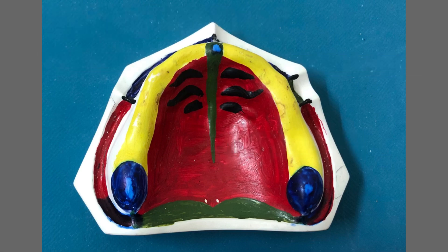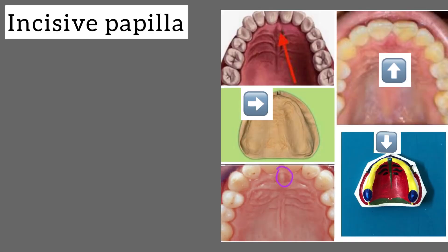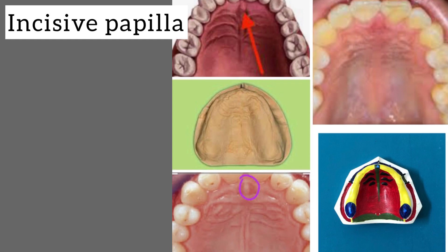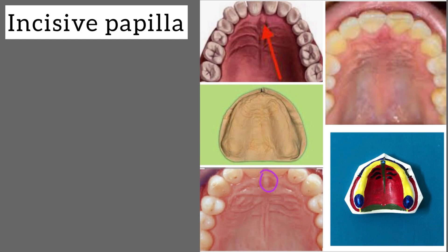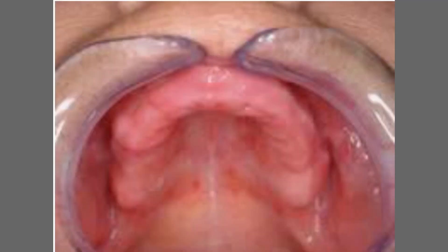The secondary relieving areas are the cuspid eminence, the torus palatinus, and the crest of the ridge. Now let's see the first one — the incisive papilla. The incisive papilla is a small oval or round-shaped mucosal prominence in the midline, seen behind the central incisors. In edentulous patients it's seen in the midline just behind the crest of the ridge. Histologically it's dense connective tissue lined by keratinized stratified squamous epithelium.